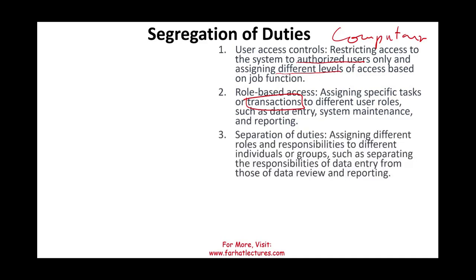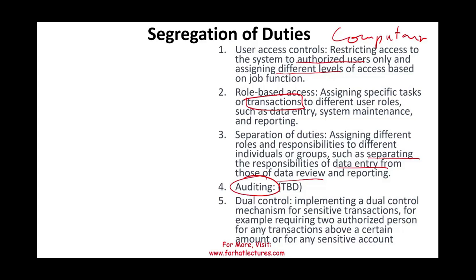Segregation of duties itself means assigning different roles and responsibilities to different individuals or groups, such as separating data entry from data review. You also need to be able to audit what others did. Dual control is another mechanism — requiring two authorized persons for any transaction above a certain amount, such as $10,000, so that no single person can process sensitive transactions alone.